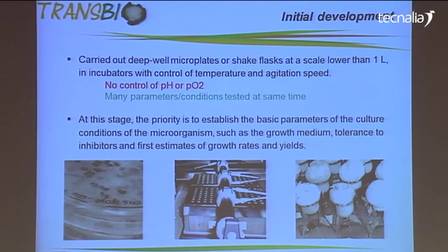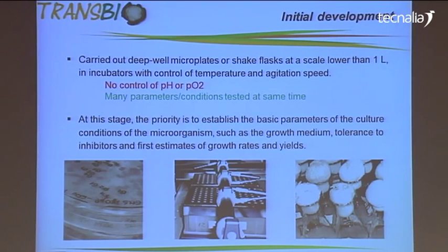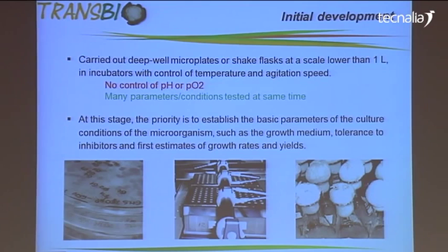At this small scale, we can find out what the basic parameters are, such as temperature and composition of medium and pH, and also determine initial values for growth rates and yields. This small scale has two basic disadvantages: the incapacity to control the concentration of dissolved oxygen and to control the pH of the culture.